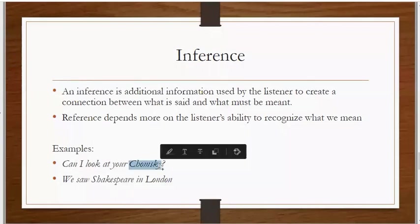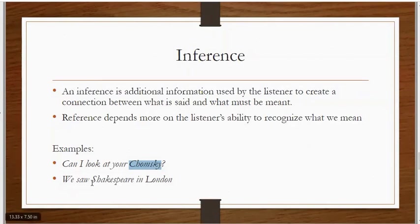Now you know Chomsky is the name of a scholar, so you cannot have a Chomsky. What your friend is asking you about is a book written by Chomsky, maybe. So he is using the word 'Chomsky' as a reference towards a book. You say yes, why not, you can have this. It means you have successfully understood the reference and you have got to know that it is actually the book which the person is referring to.